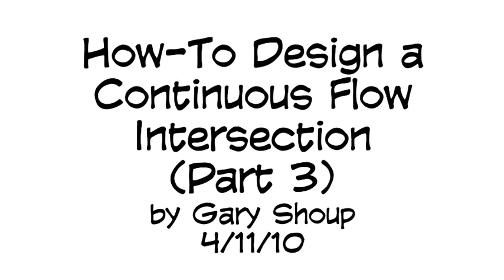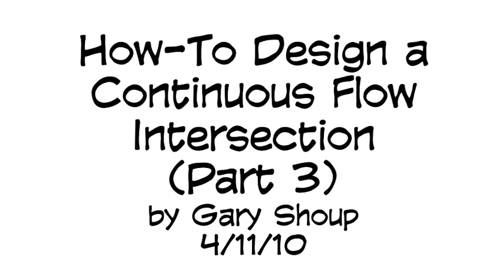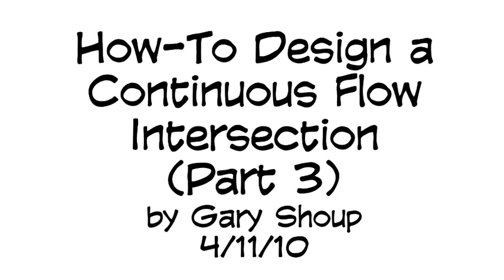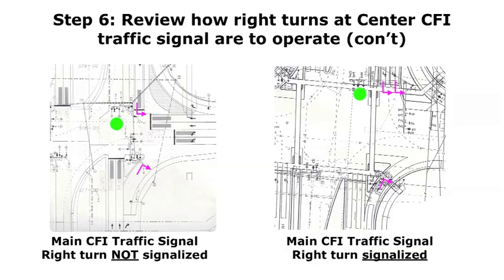This is Gary Shoup with part 3 of how to design a continuous flow intersection. Step 6: we were talking about how to review right turns at the center CFI traffic signal and how they are to operate.